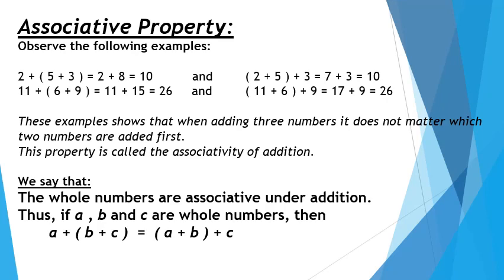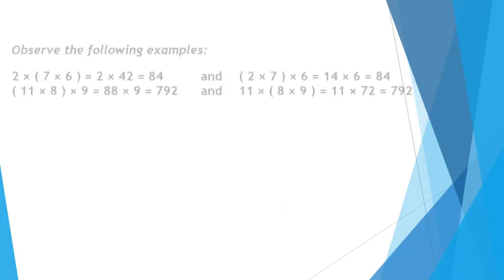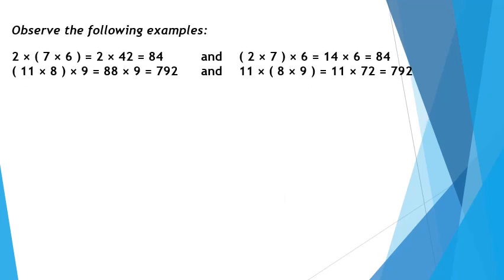We say that whole numbers are associative under addition. Thus, if A, B, and C are whole numbers, then A can be added to the group of B and C, and the answer is the same as when we add C to the group of A and B. Now let us see whether this property of associativity is true for multiplication or not, and observe a few examples for multiplication.